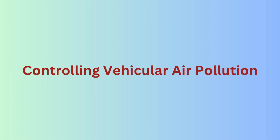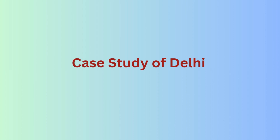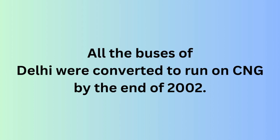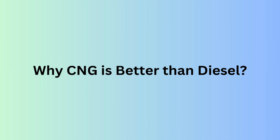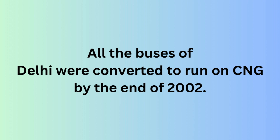Let us discuss a case study of Delhi on how we can control vehicular air pollution. With its very large population of vehicular traffic, Delhi leads the country in its level of air pollution, having more cars than the states of Gujarat and West Bengal put together. In the 1990s, Delhi ranked fourth among the 41 most polluted cities of the world. Air pollution problems in Delhi became so serious that after being censured by the Supreme Court, the government was asked to take appropriate measures within a specified time period, including switching the fuel of public transport buses from diesel to compressed natural gas, i.e. CNG. All the buses of Delhi were converted to run on CNG by the end of 2002.